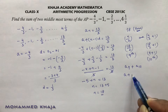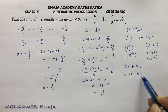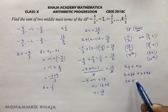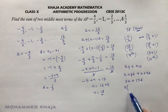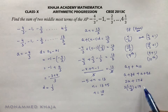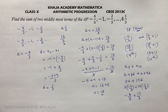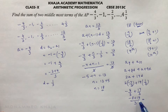A9 = A plus 8D and A10 = A plus 9D. Adding them: 2A plus 17D. Substituting A = minus 4 by 3 and D = 1 by 3: 2 times minus 4 by 3 gives minus 8 by 3, and 17 times 1 by 3 gives 17 by 3. Taking LCM as 3: minus 8 plus 17 equals 9 by 3, so the answer is 3.